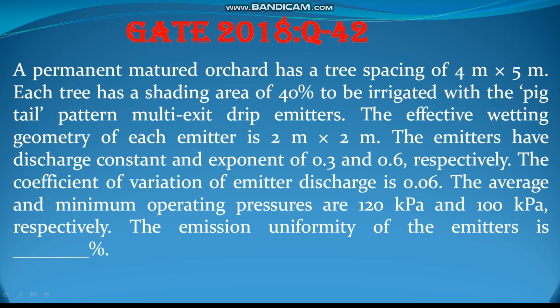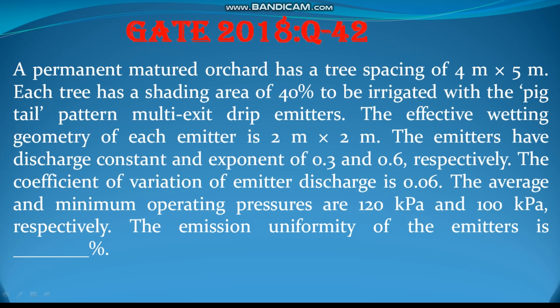You have to find out the emission uniformity of the drip irrigation system as a block. The drip irrigation system uses small emitters where pressure is maintained and drip irrigation is done at the root zone level, in this case the shading area. This shading area is 40 percent of the tree area, and the tree spacing is 4 meter by 5 meter. Emission uniformity is expressed as a percentage.